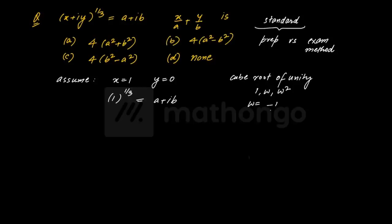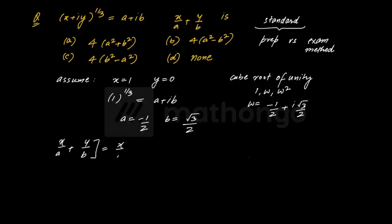Omega kya hota hai - minus 1 by 2 plus iota root 3 by 2. Toh yahaan se agar equate karte hain toh a ki value ban jaati hai minus 1 by 2, and b ban jaata hai root 3 by 2. So x by a plus y by b kitna ho jaata hai - yeh toh component 0 hi tha, toh y ko 0 le liya. Toh actual mein x by a, but x by a kitna ho gaya - 1 by a ke barabar ho gaya, jo ki nothing but minus 2.